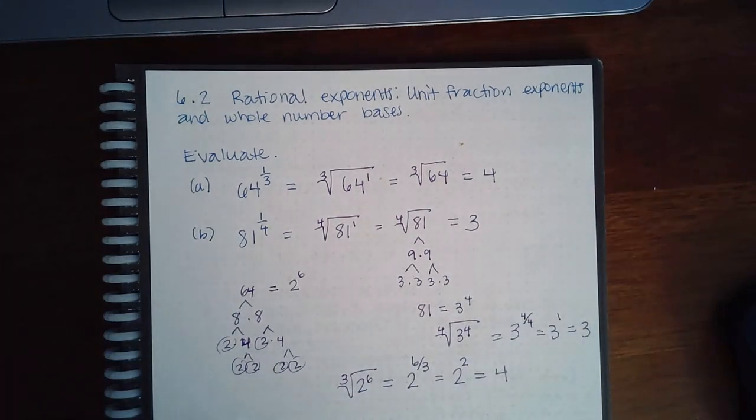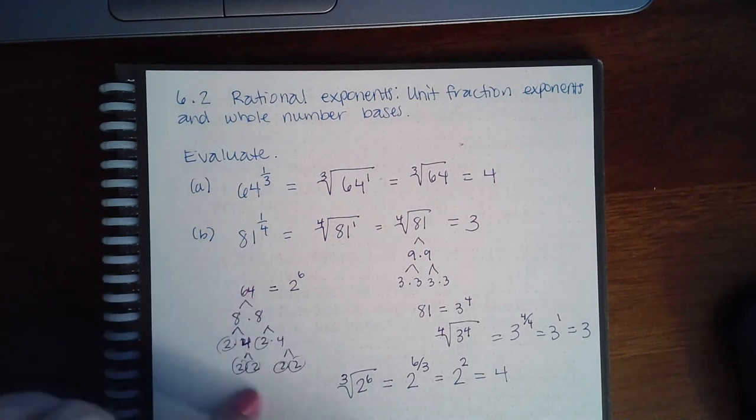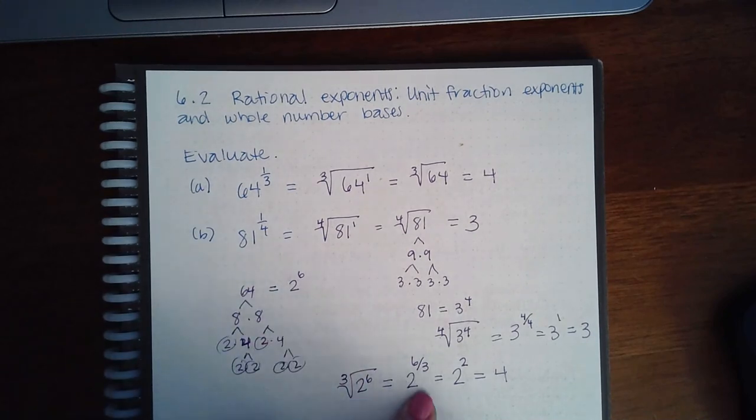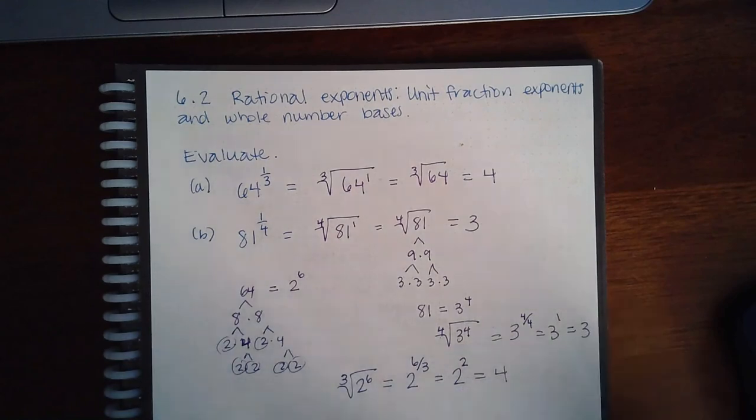So if you don't memorize your perfect cubes and your perfect 4th powers, there is a way to find it by breaking up your number into its prime factorization. And then once you have it in its prime factorization, write it with exponents, and then use your exponent rules to start simplifying that.